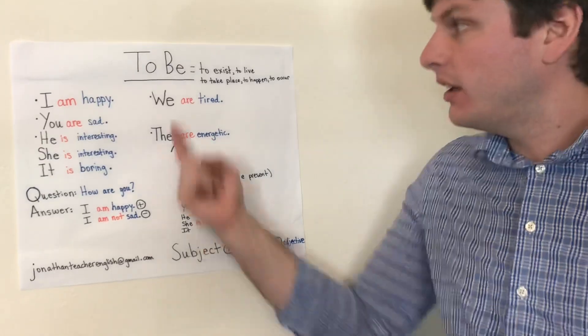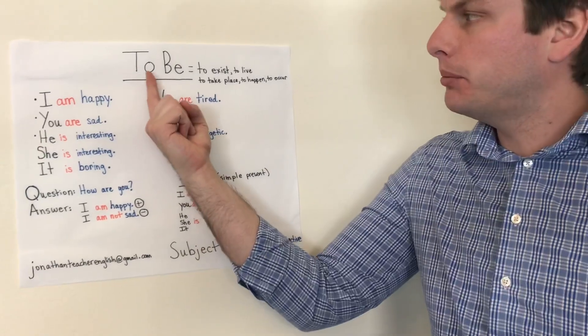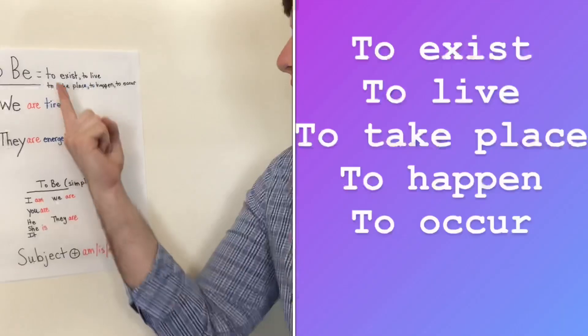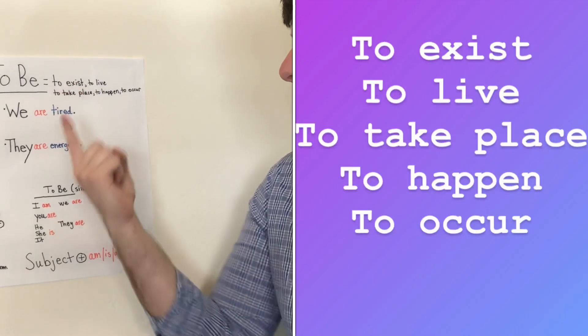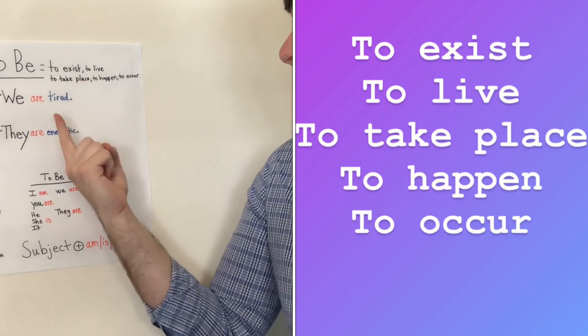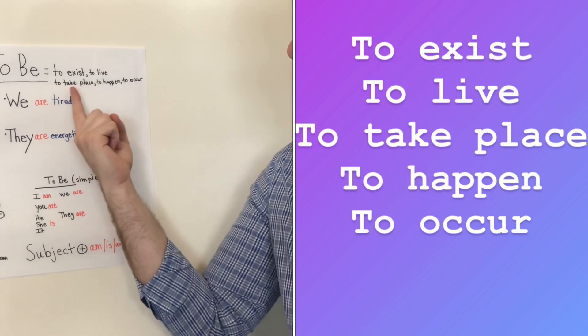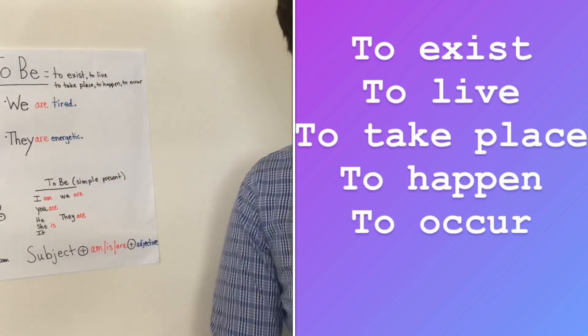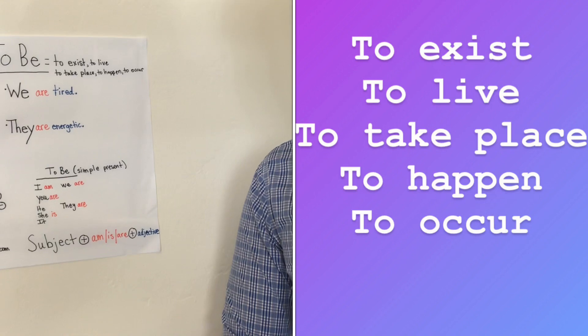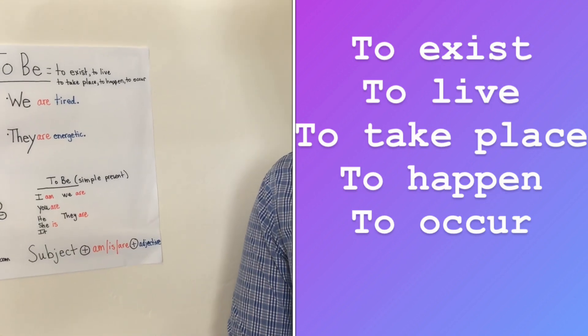Meaning: the verb to be means to exist, to live, to take place, to happen, or to occur.